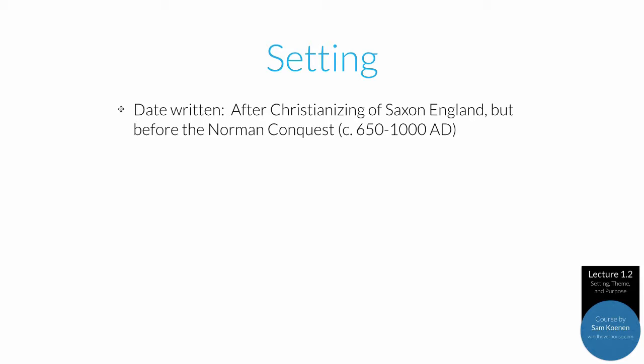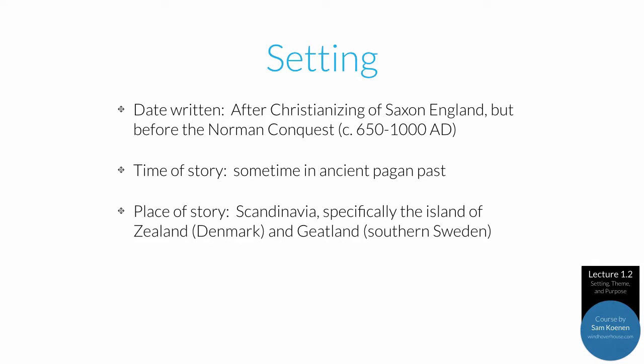Though written in Old English by a Christian author, the story of Beowulf is actually set in the ancient pagan past. It takes place in Scandinavia — specifically the island of Zeeland in modern-day Denmark, and Jätland, which is in southern Sweden. The hero is from a tribe called the Geats (spelled G-E-A-T-S, but pronounced "Yats" in Old English).